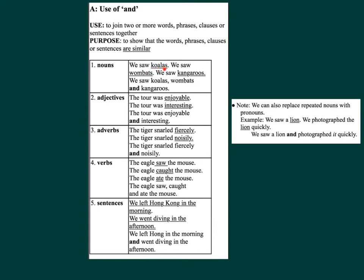Number one, nouns: 'We saw koalas. We saw wombats. We saw kangaroos.' → 'We saw koalas, wombats, and kangaroos.' Number two, adjectives: 'The tour was enjoyable and interesting.' Number three, adverbs: 'The tiger slashed fiercely and noisily.' Number four, verbs: 'The eagle saw, caught, and ate the most.' Number five, sentences: 'We left Hong Kong in the morning and went diving in the afternoon.'